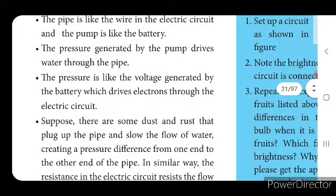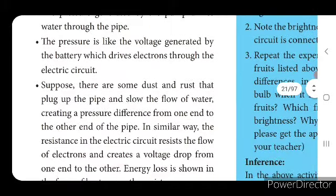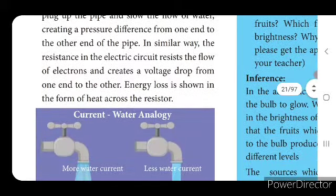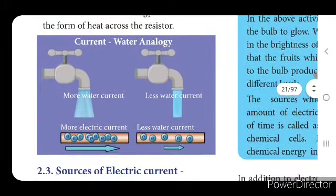If there is any dust or rust that plugs the pipe and slows the flow of water, the force of water decreases, creating a pressure difference from one end to the other end of the pipe. In the same way, resistance in the electric circuit resists the flow of electrons and creates a voltage drop from one end to the other. Energy loss is shown in the form of heat across the resistor.